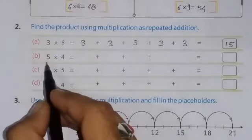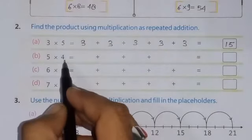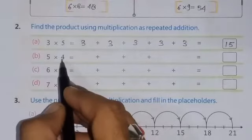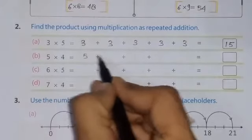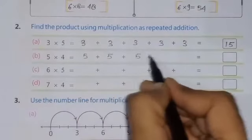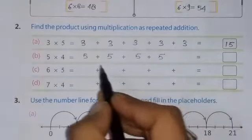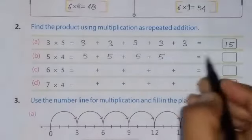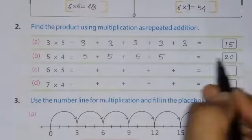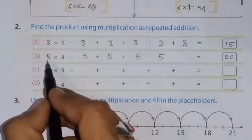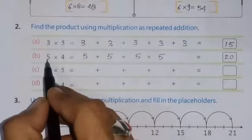Next, B is given. 5 into 4. It means we have to write 5 how many times? 4 times. So, 1, 2, 3, and 4. And you can see the sum of these 4 numbers will be 20. Or, we can check by table of 5, 4 times. 5 fours are 20.